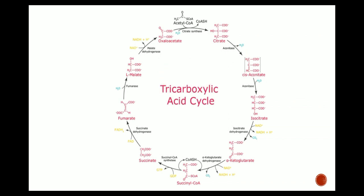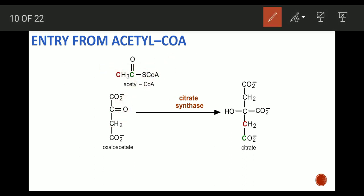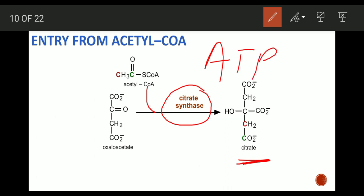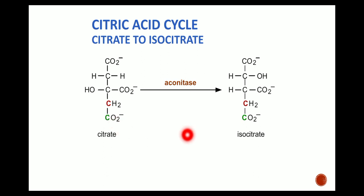The entry step: acetyl CoA and oxaloacetate both bind to form the citrate compound, with the help of the enzyme citrate synthase — note that synthase does not require ATP, whereas synthetase requires ATP. This is an important distinction. This is also called a condensation reaction, as the two molecules are condensed to form citrate.